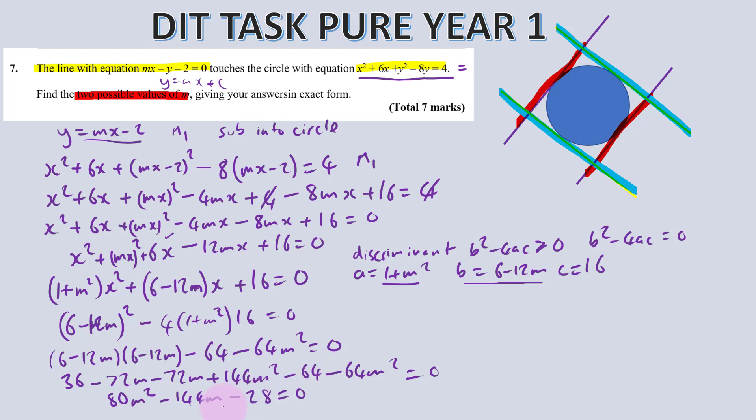You need to be able to expand this out really well. Because it's going to become a quadratic. So remember this is going to be 6 minus 12m times 6 minus 12m. Minus 4 times 16 is 64 and minus 4m squared times 16 is minus 64m squared equals 0. This bit here is going to give us 36 minus 72m minus 72m and plus 144m squared. That's minus 64 minus 64m squared equals 0. Now let's simplify that.